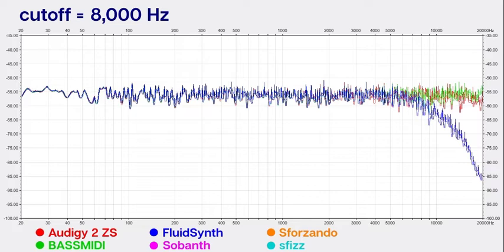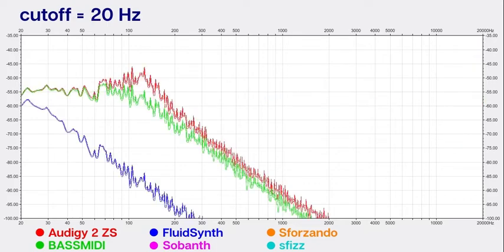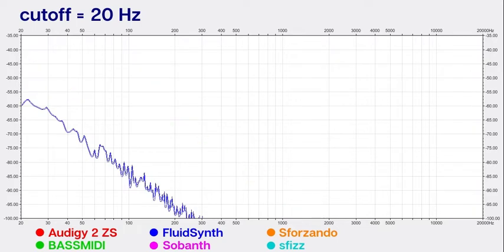The only one I haven't gone over is SoBanth. This is another sound font synth, in particular a VSTi, that is fully compliant with the sound font specification, as is FluidSynth. BASSMIDI does not support all modulators but is otherwise pretty good in its sound font support. I will compare SoBanth with FluidSynth as it is very similar in its filter implementation.